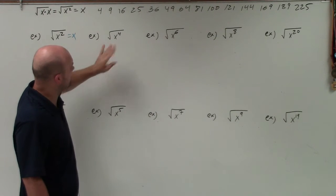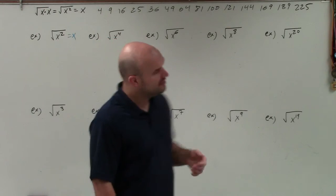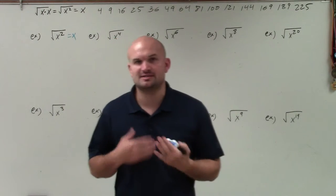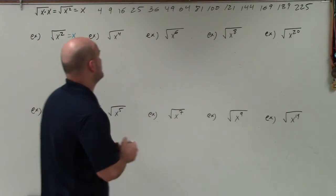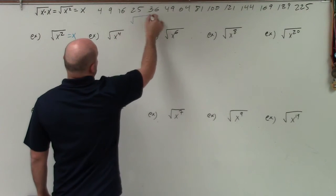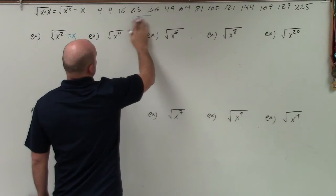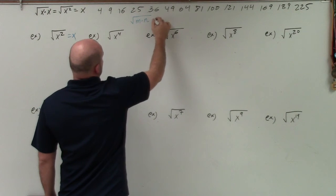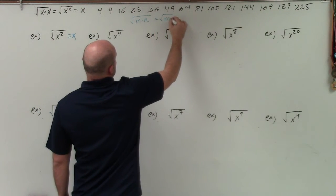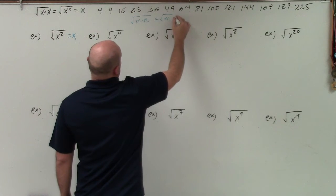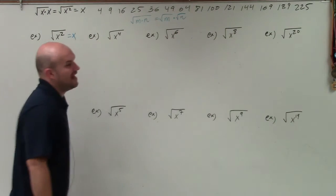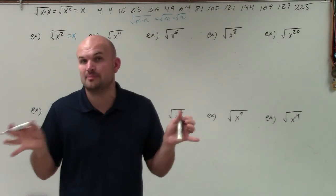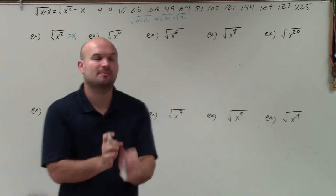The first example is pretty basic. Now let's look at x to the fourth. For the next examples, I'm going to use prime factorization and break everything down. There is one rule I want to remind you of: the square root of m times n is equal to the square root of m times the square root of n. So when we have terms separated by multiplication under a radical, we can break those up into two separate problems separated by multiplication.